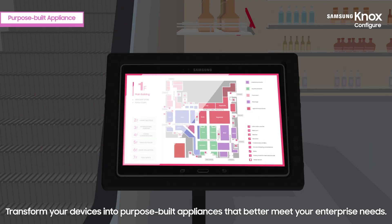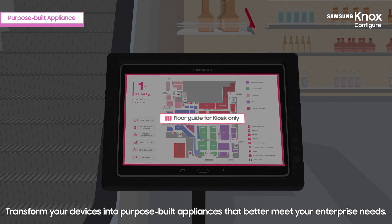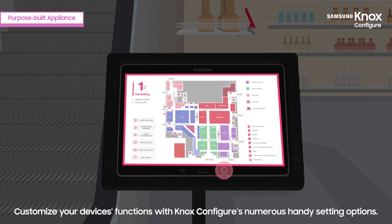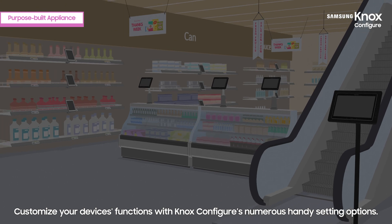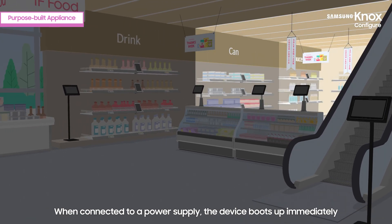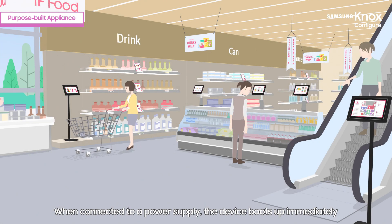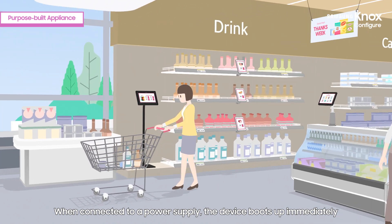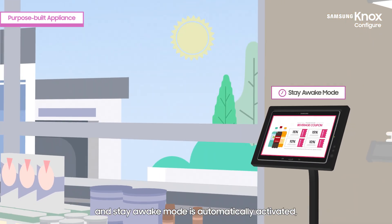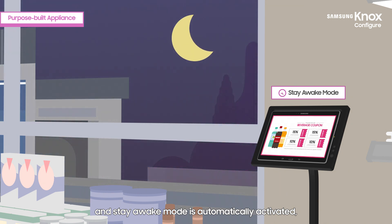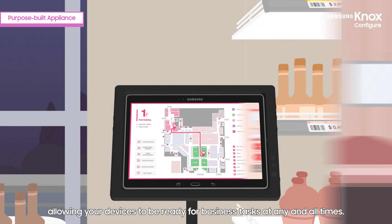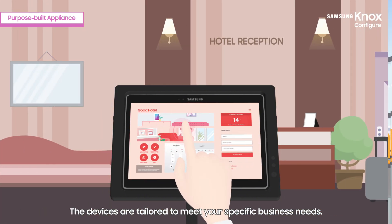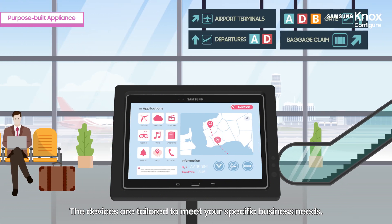Transform your devices into purpose-built appliances that better meet your enterprise needs. Customize your device's functions with Knox Configure's numerous handy setting options. When connected to a power supply, the device boots up immediately and stay awake mode is automatically activated, allowing your devices to be ready for business tasks at any and all times. The devices are tailored to meet your specific business needs.